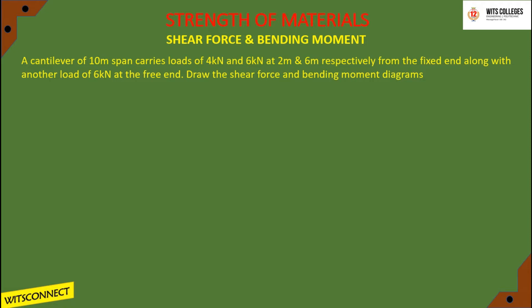So for this given problem, we first draw the load diagram. This is a cantilever beam over a total span of 10 meters, with point A at the fixed end and point B at the free end. A load of 4 kilonewtons acts at 2 meters from the fixed end, and 6 kilonewtons acts at 6 meters from the fixed end.